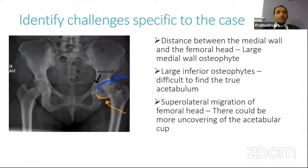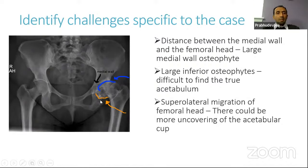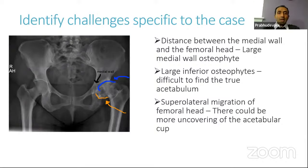Next, identify the challenges specific to that particular case. In this X-ray, there is a big osteophyte on the medial wall — the femoral head is displaced superiorly and laterally, meaning we know there is a large medial wall osteophyte in the acetabulum, so we had to ream medially to reach the appropriate depth. There is also a large inferior osteophyte and the head has migrated superiorly, indicating more wear of the superior aspect of the acetabulum. We have to anticipate that the superior-lateral part of the cup is going to be uncovered. All these things we need to look for in preoperative X-rays for proper planning.